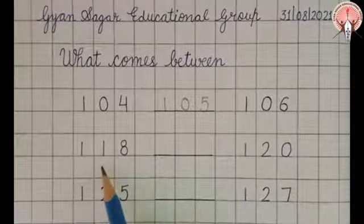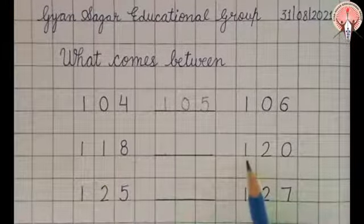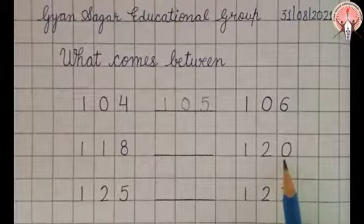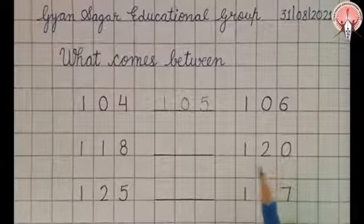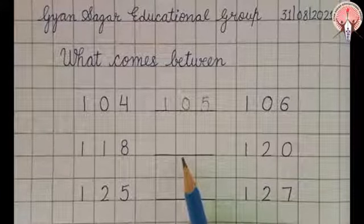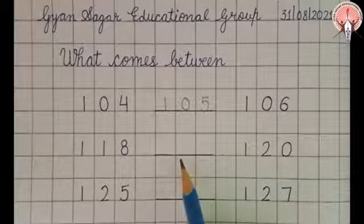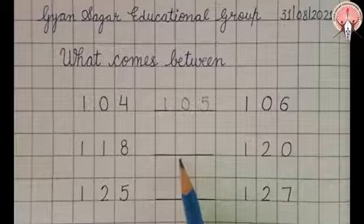Next is one hundred eighteen and one hundred twenty. So which number comes in between? Let's start counting: 111, 112,